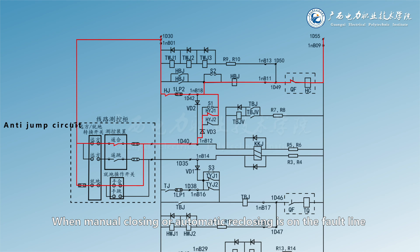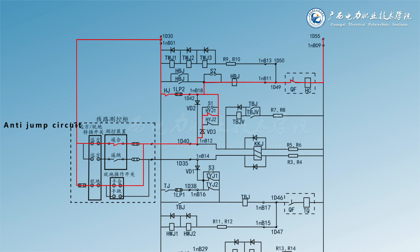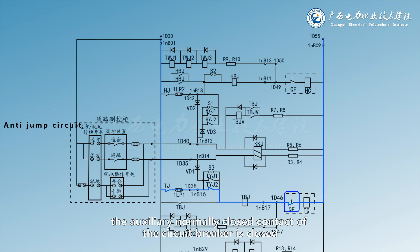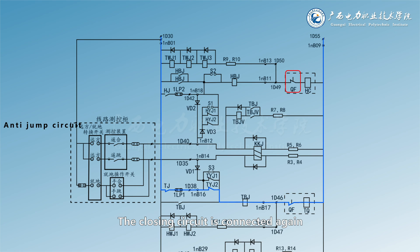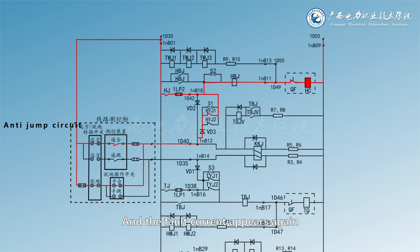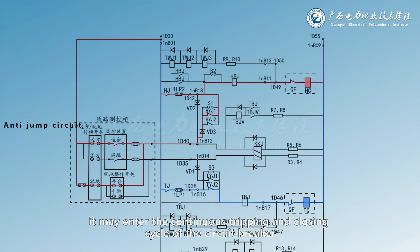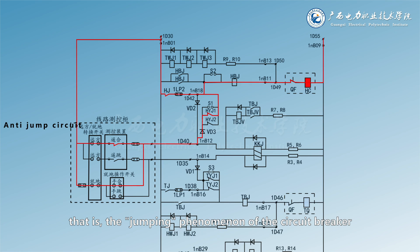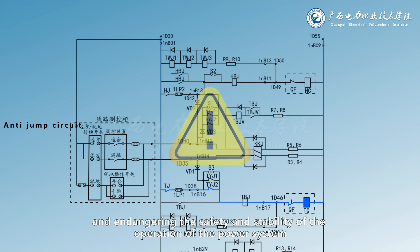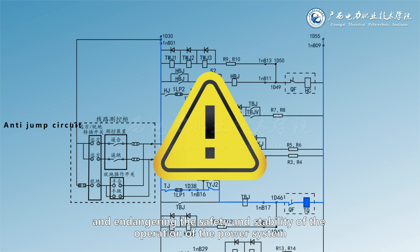When manual closing or automatic REC closing is on a fault line and the closing pulse is not released for some reason, after the protection trips the circuit breaker, the auxiliary normally closed contact of the circuit breaker is closed. The closing circuit is connected again and the circuit breaker is closed again immediately, causing the fault current to appear again. The protection will trip again. If repeated, it may enter a continuous tripping and closing cycle — the jumping phenomenon of the circuit breaker — resulting in damage or even explosion of the circuit breaker and endangering the safety and stability of the power system.